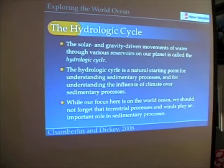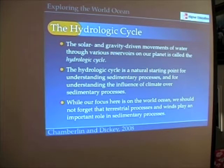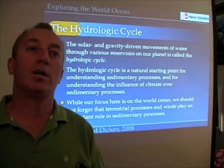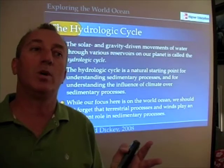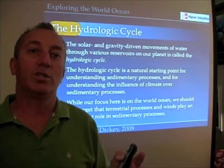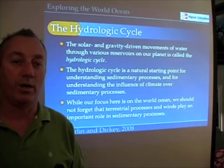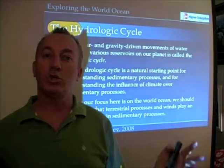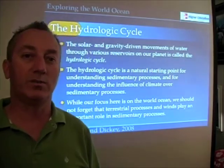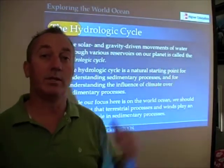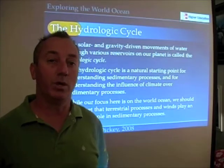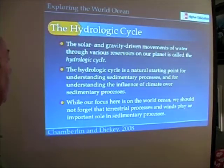Simply defined, the hydrologic cycle is the solar and gravity-driven movements of water through various reservoirs on our planet. When I'm talking about a reservoir, I'm talking about a place where you find lots of water — just like a pan is a reservoir for water. The ocean is the largest reservoir for water. Our atmosphere is another reservoir, and we'll talk about that in just a minute.